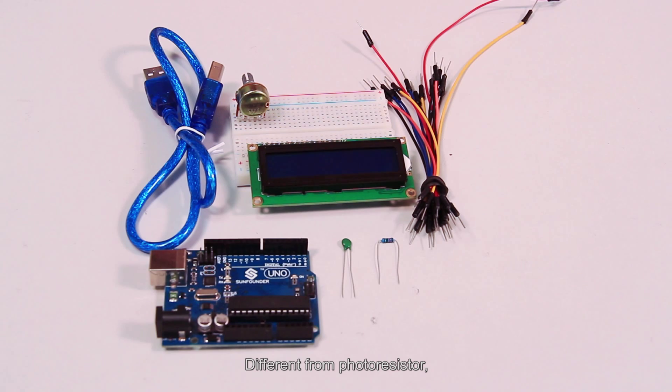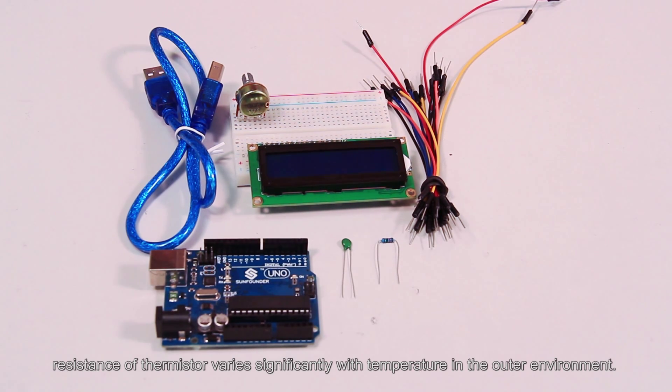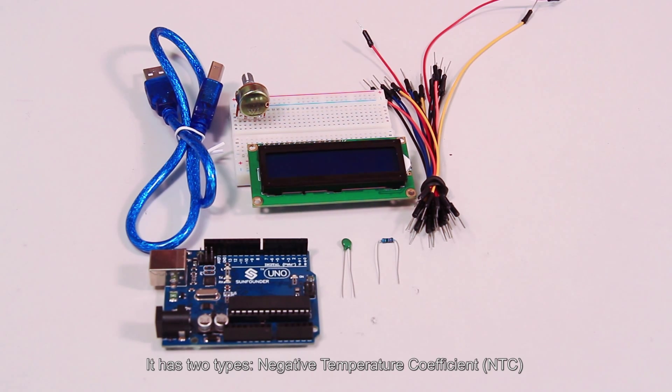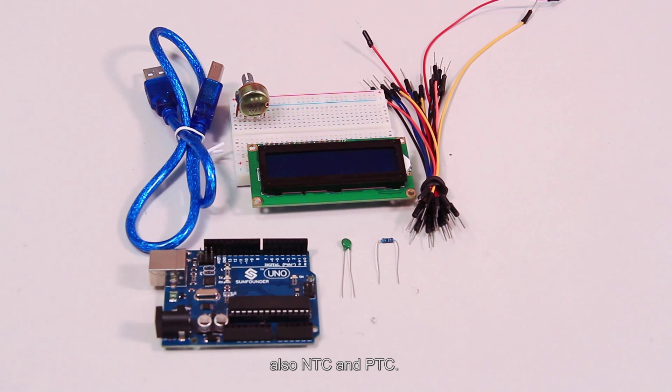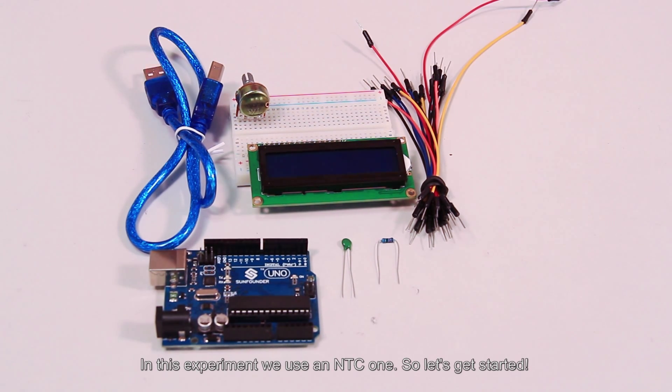Different from photoresistor, resistance of thermistor varies significantly with temperature in the outer environment. It has two types, negative temperature coefficient and positive temperature coefficient, also NTC and PTC. In this experiment, we use an NTC. So let's get started.